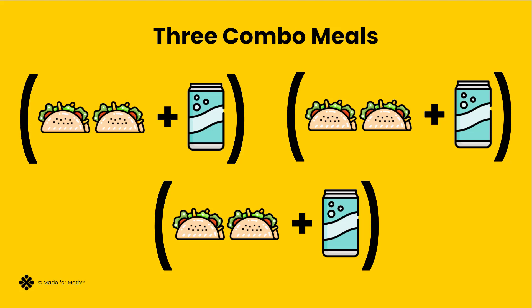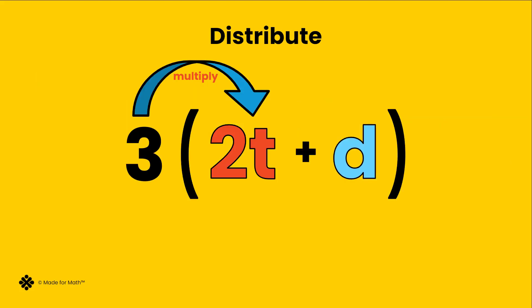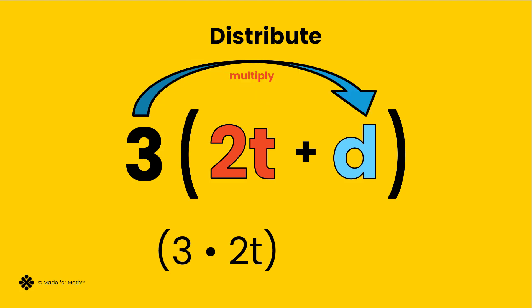Now we can see that all together we have three combo meals, which has six tacos and three drinks together. In just numbers, we can distribute the three equally through multiplication to the two t — three times two t — and distribute the three through multiplication to the d.